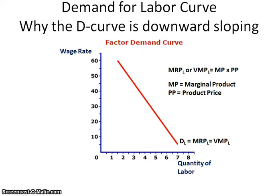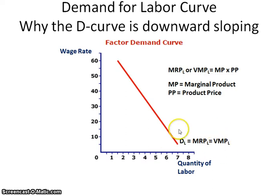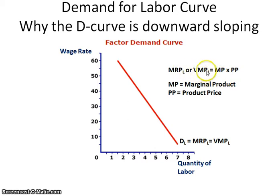The demand curve is downward sloping. You need to get into the habit of being able to label the demand curve as MRP for labor, which is marginal revenue product, and VMP for labor. Your book uses VMP throughout, and either one will be on AP exams. The most important formula from the factors market is that the marginal revenue product, or value of the marginal product, equals marginal product times product price: VMP equals MP times PP.